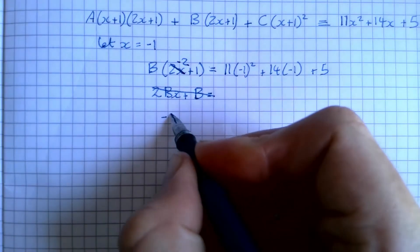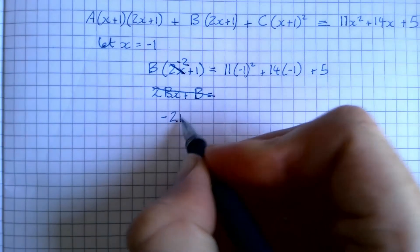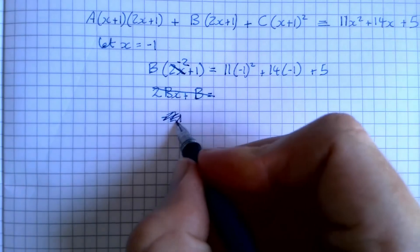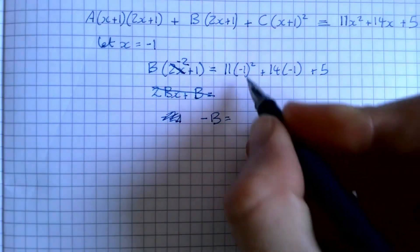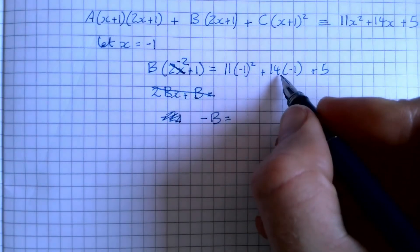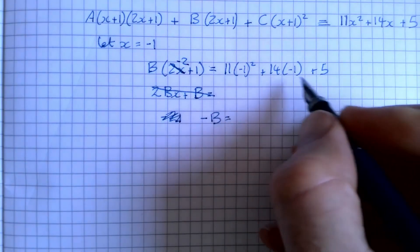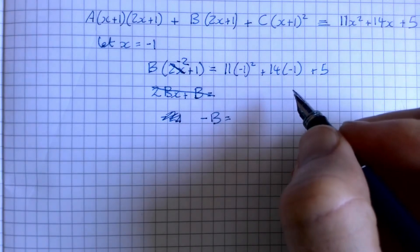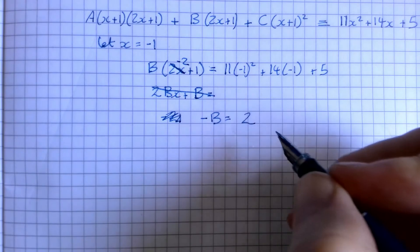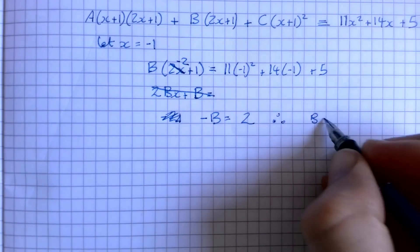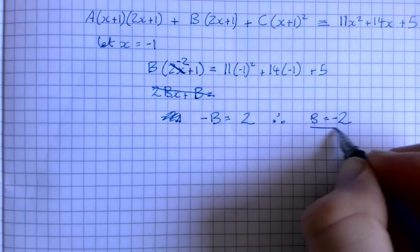Right, I've got minus 2B. Well, I can sort that out, can I? What am I talking about? Minus 2 plus 1 is minus 1, so that's going to give us minus 1B is equal to minus 1 squared is 1, so that's just 11 plus take 14 plus 5. So 11 take 14 is negative 3 plus 5 is 2, so that means that negative B is 2, therefore B equals negative 2.